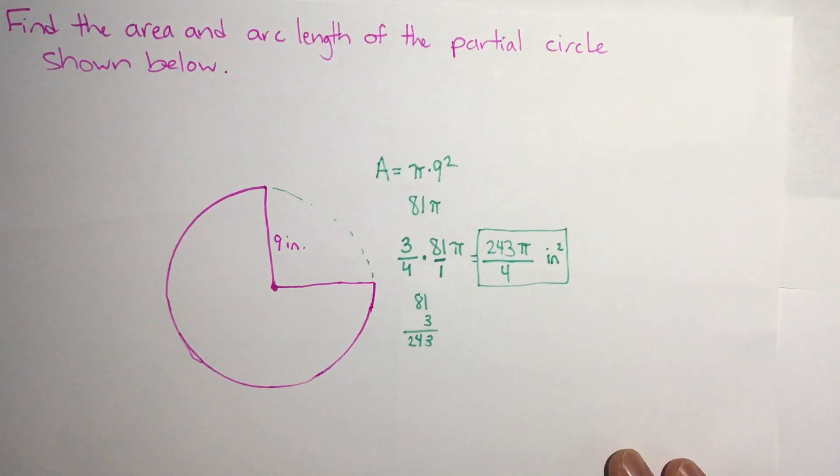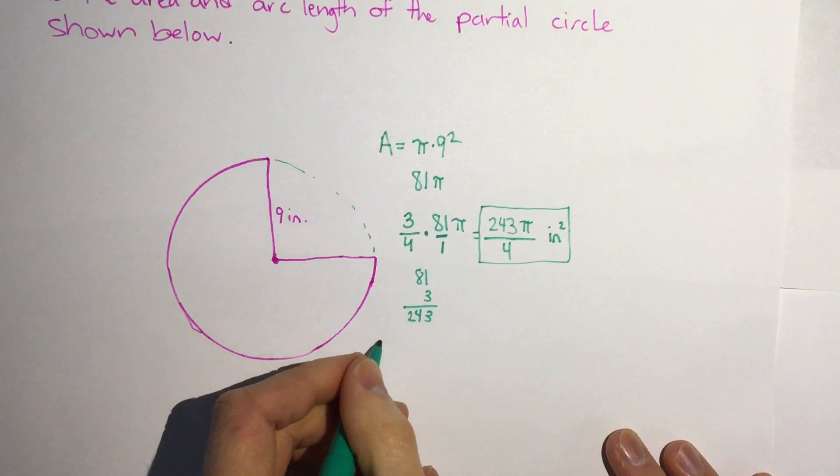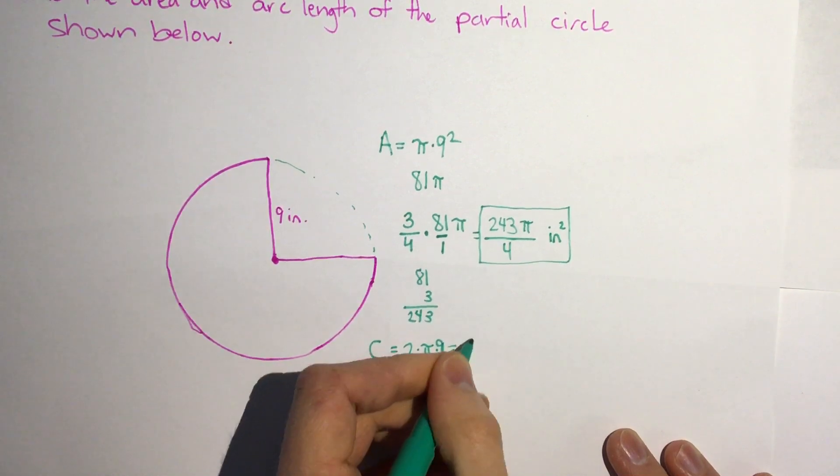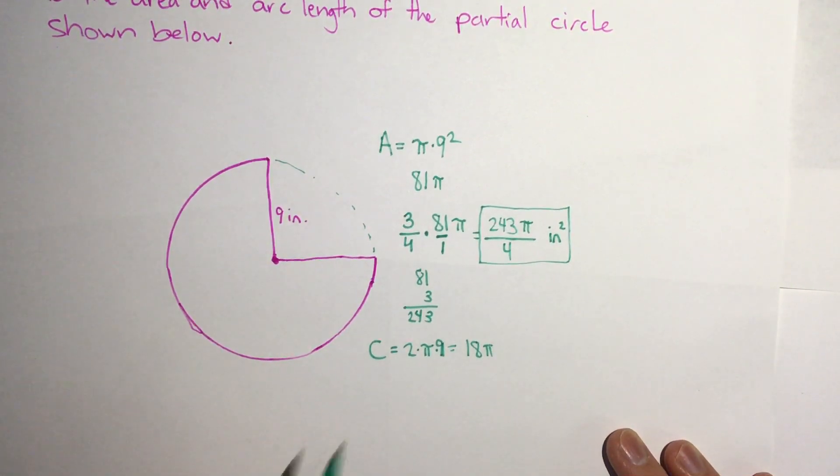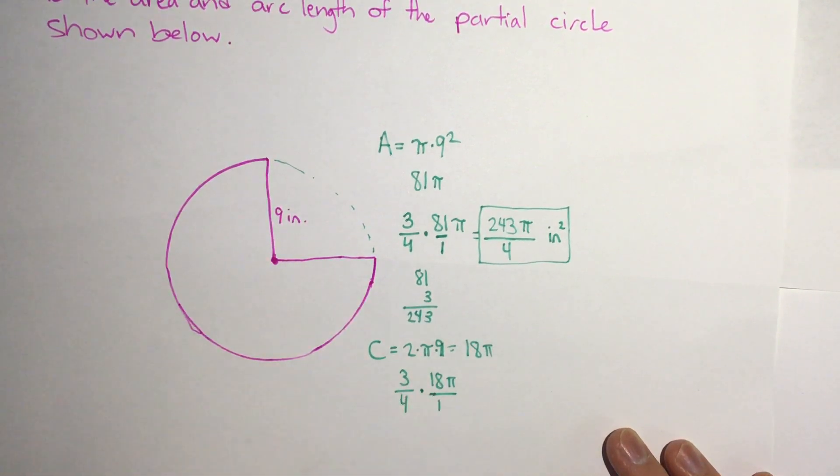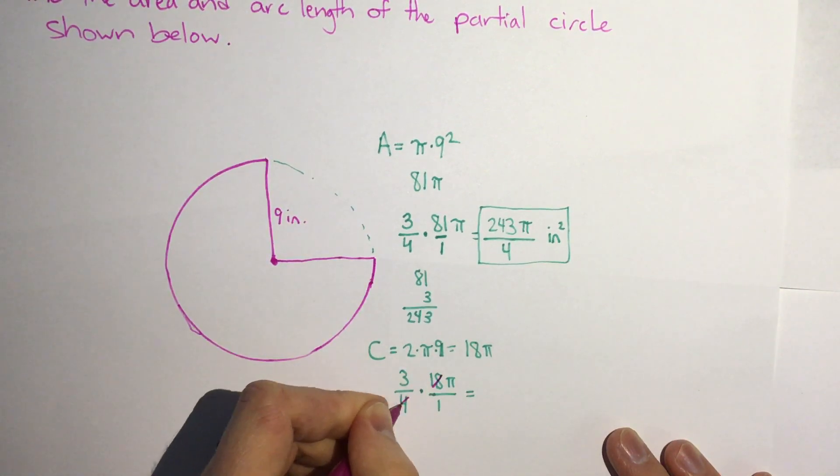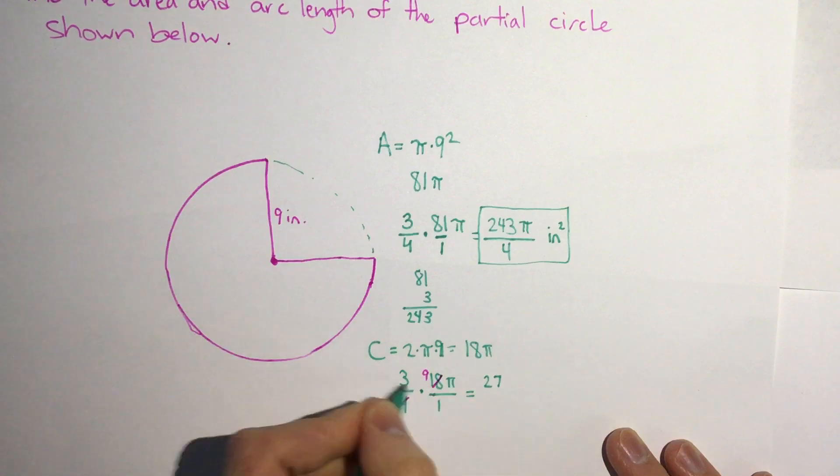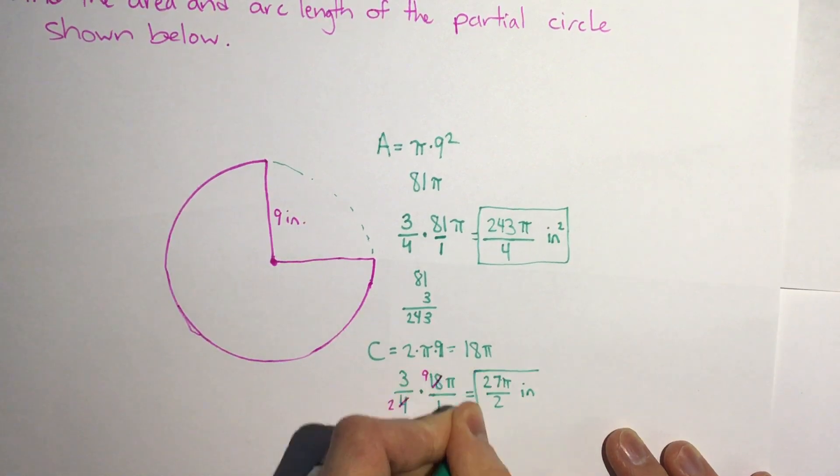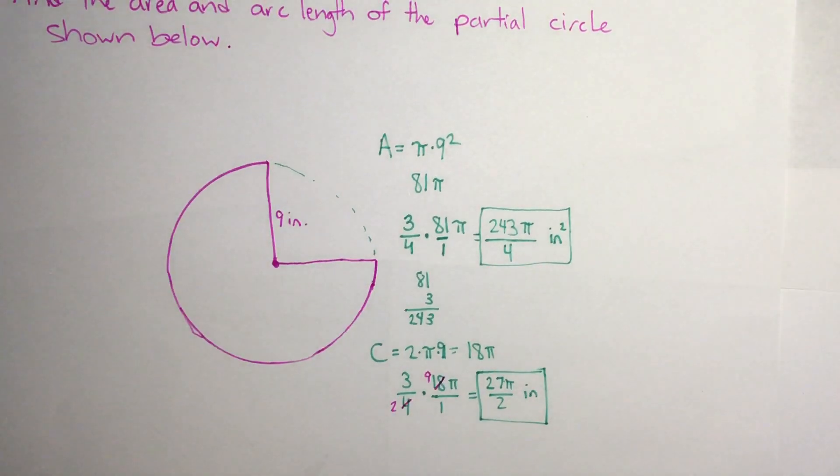Then our arc length again we're gonna find the circumference. So circumference would be 2 times pi times 9. 2 times 9 is 18, 18 pi. And again it's 3 quarters of the circle. So we're gonna do 3 fourths times 18 pi. We'll put that over 1. And to simplify before we even multiply, I'm gonna change 18 and 4 to 9 and 2. So 3 times 9 is 27 pi over 2. And that can't simplify. 27 pi over 2 inches. That would be the arc length.